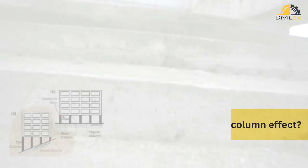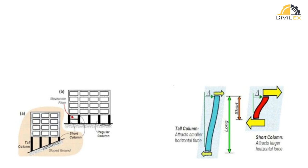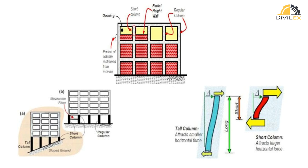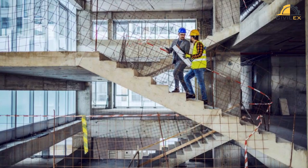Now, when a column is shorter than its surrounding members, it experiences more stress and strain than the taller ones. This is due to the fact that the load is concentrated on a smaller surface area, causing the column to buckle and fail under pressure. In the case of a staircase section, the short columns are located at the corners where the stairs turn. These corners experience more stress and strain than other parts of the staircase, and the short columns supporting them are at risk of buckling.